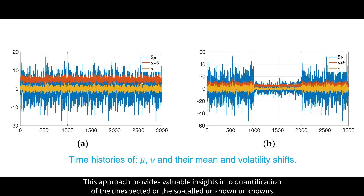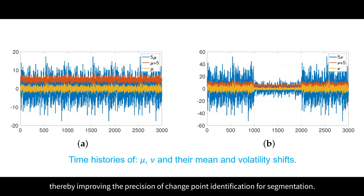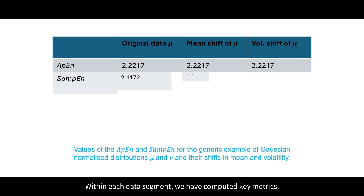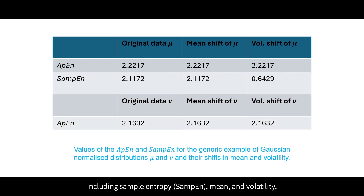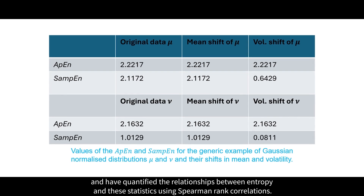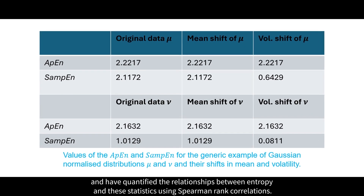This approach provides valuable insights into quantification of the unexpected, or the so-called unknown unknowns. Specifically, we have proposed a methodology that involves detrending the data through differencing, thereby improving the precision of change point identification for segmentation. Within each data segment, we have computed key metrics including sample entropy, mean, and volatility, and have quantified the relationships between entropy and these statistics using Spearman rank correlations.